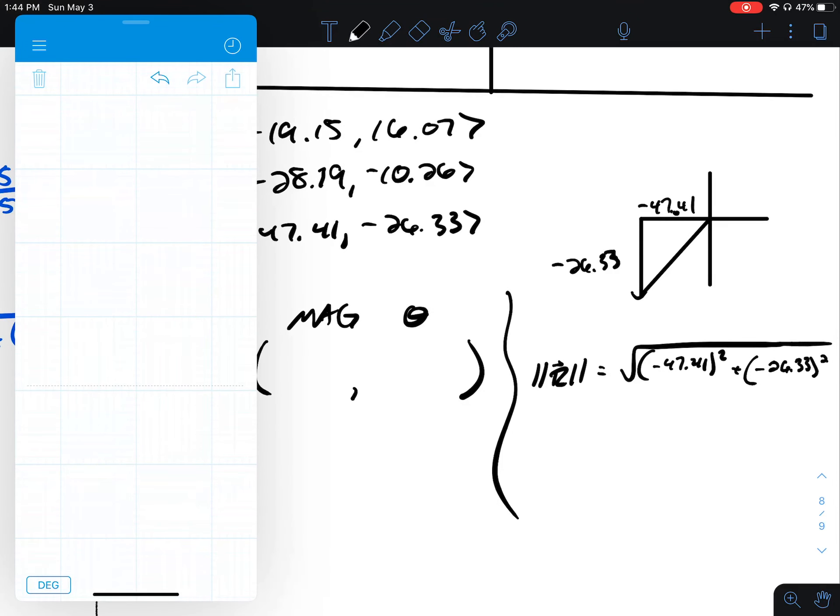Put that in my calculator. Negative 47.41 squared plus negative 26.33 squared, and I square root this. It's going to give me 54.23.